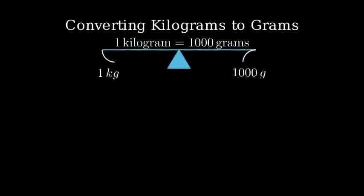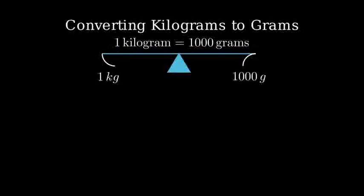So, to convert 0.2 kilograms to grams, we multiply by 1,000. 0.2 times 1,000 equals 200 grams.